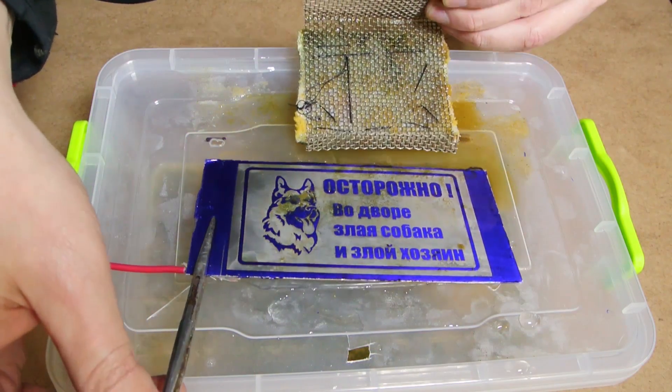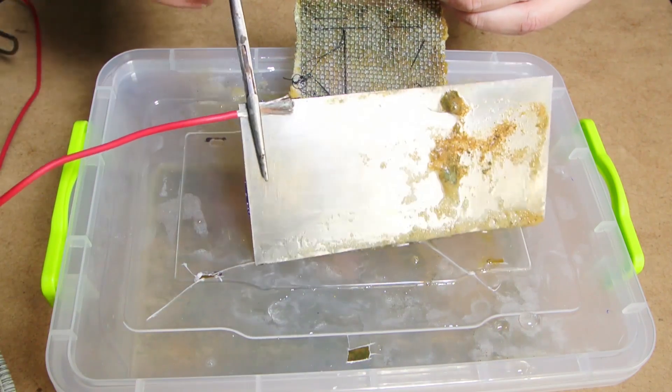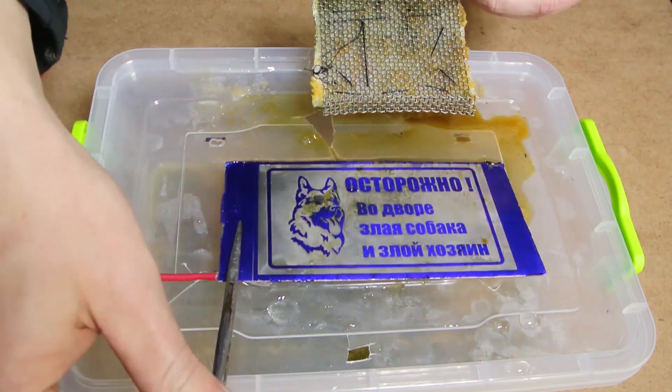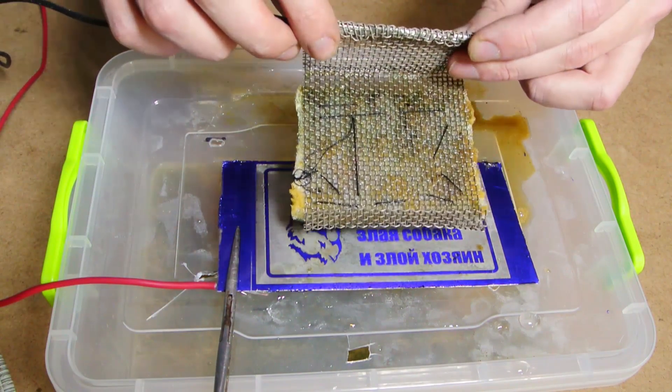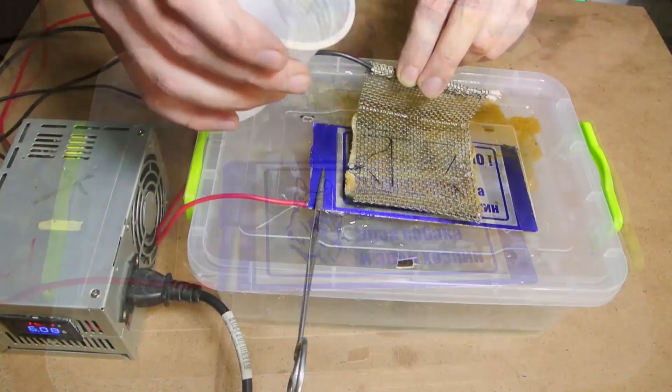For engraving, you need a constant current source. In my case, a car battery. You can still use any power supply. The anode is connected to the part, and the cathode could be a net or a plate from any metal. The cathode and anode must not touch each other, so I've attached a piece of sponge to the cathode.